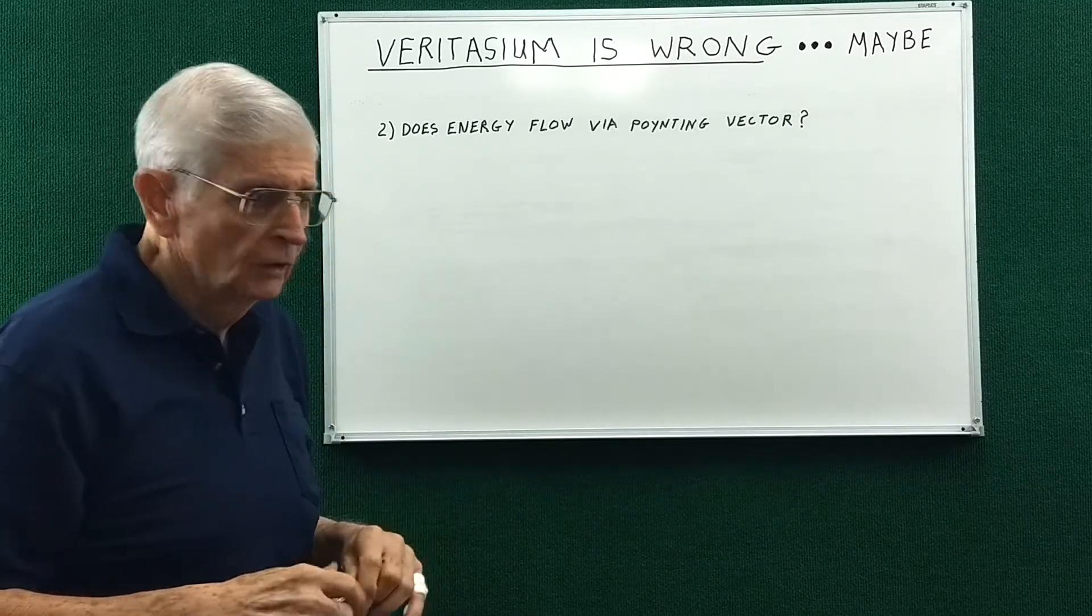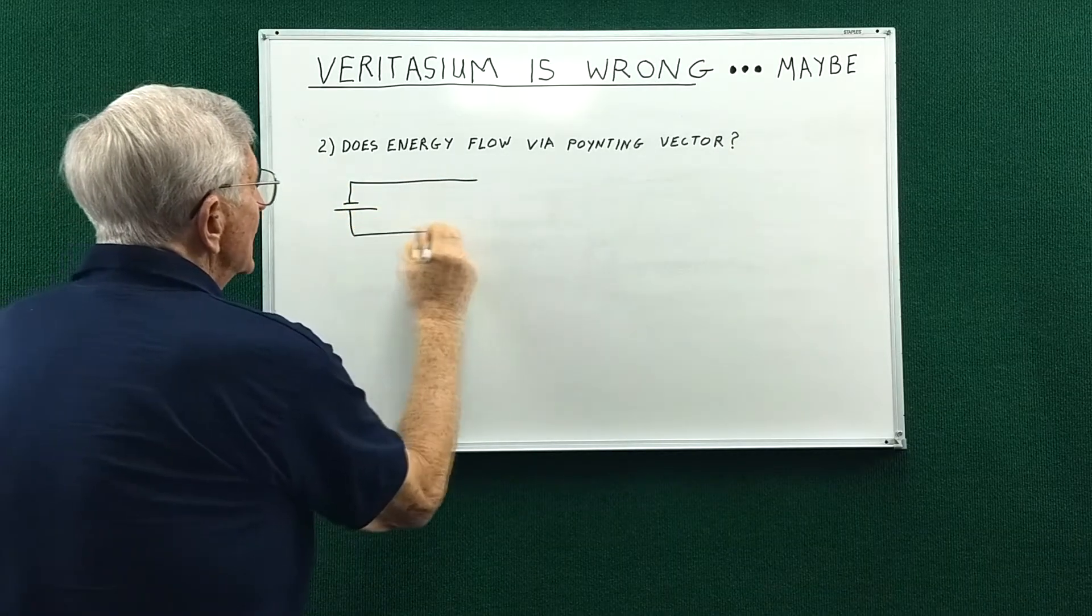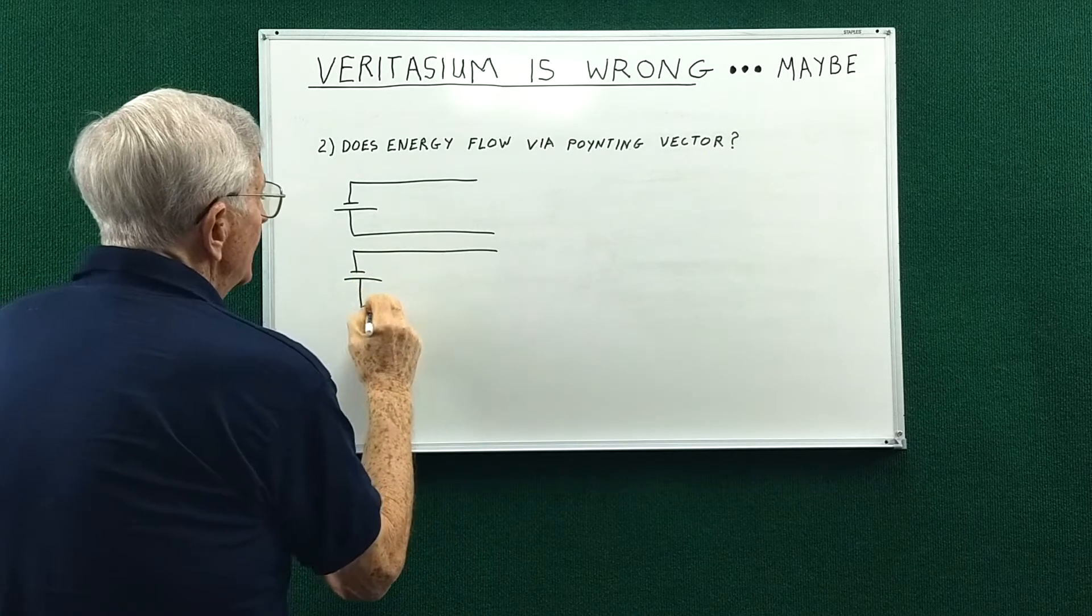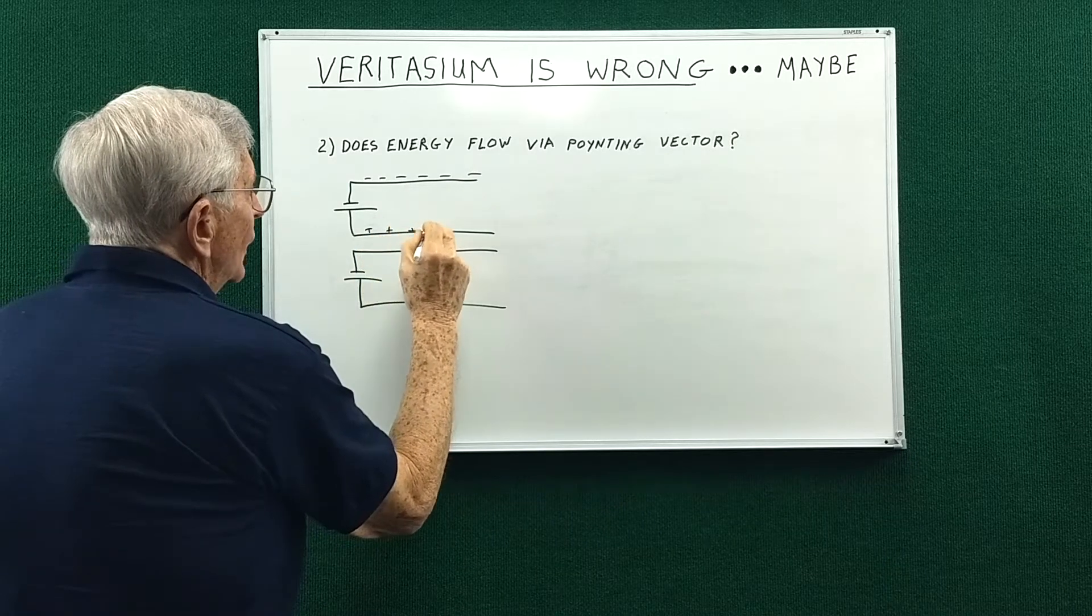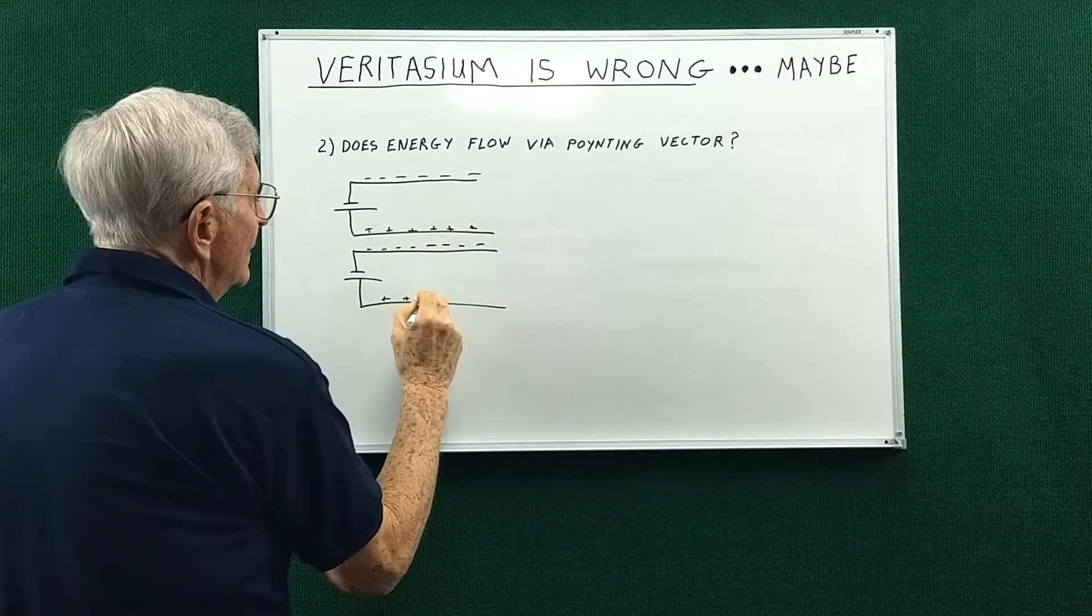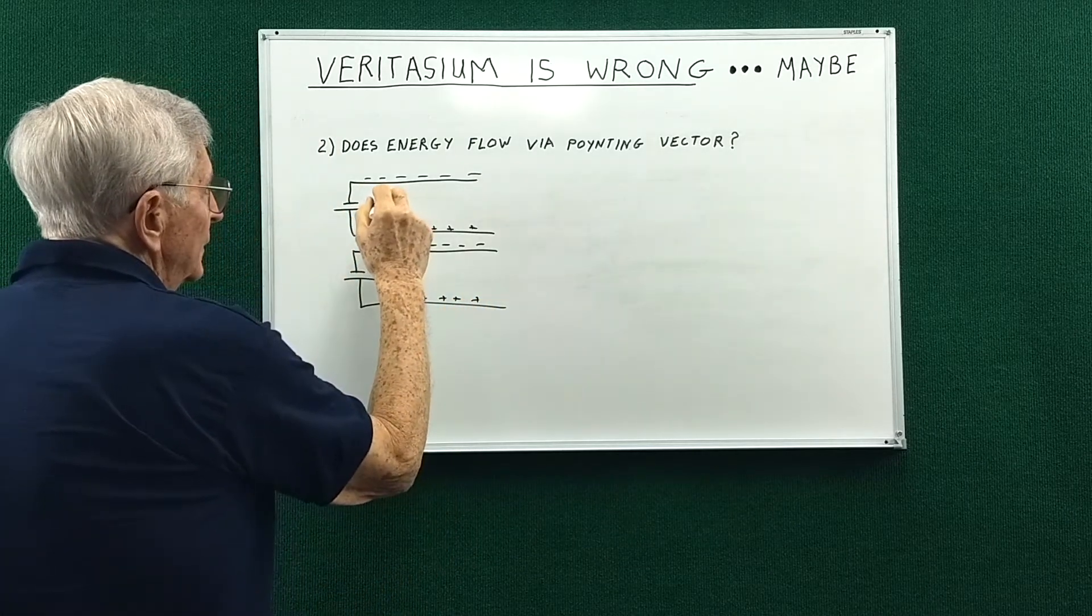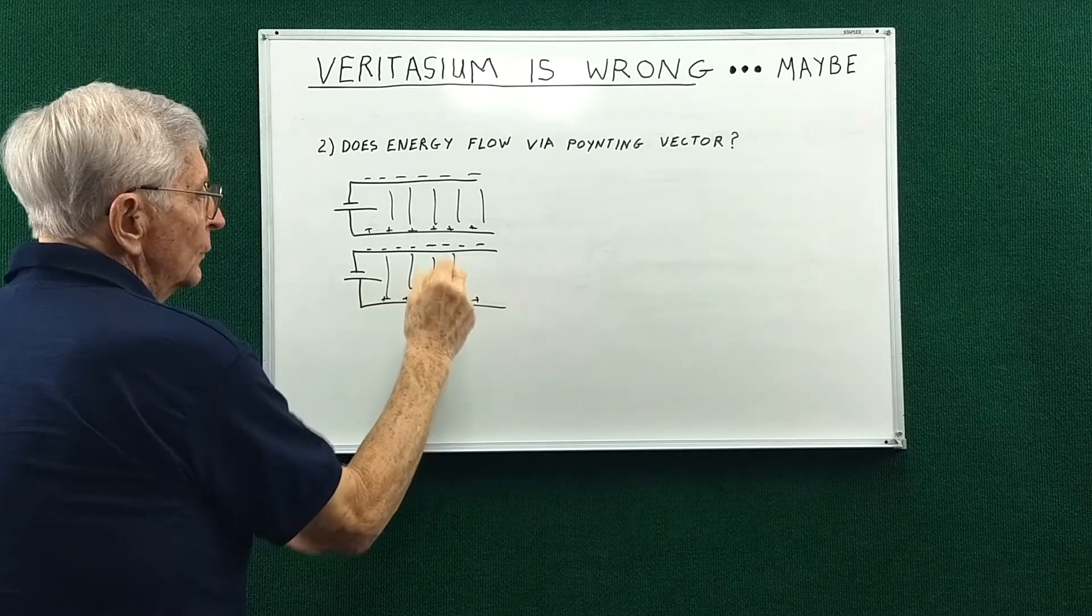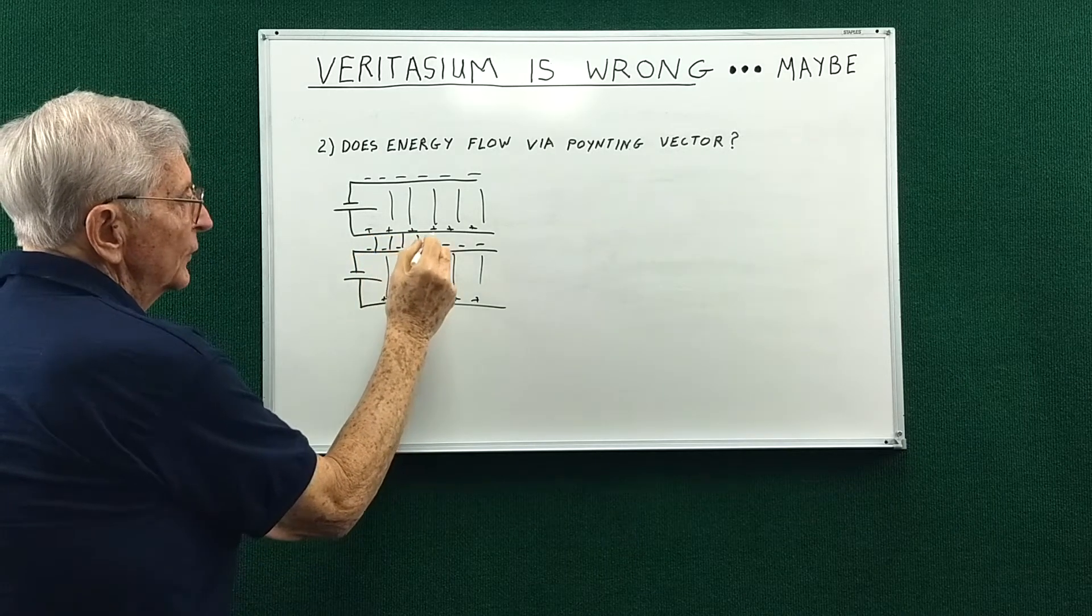So let's look at some things here quickly. We have a battery with two wires out here, and then another battery with wires out here. We have charges on these wires, and charges on these wires. So there's an electric field between these wires, and an electric field between these wires. The question is, is there an electric field between those wires?